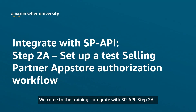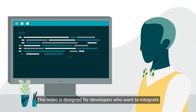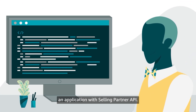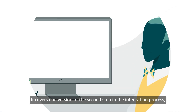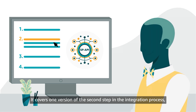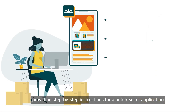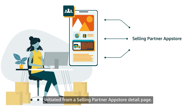Welcome to the training: Integrate with SP API, Step 2A — Set Up a Test Selling Partner App Store Authorization Workflow. This video is designed for developers who want to integrate an application with Selling Partner API. It covers one version of the second step in the integration process, providing step-by-step instructions for a public seller application initiated from a Selling Partner App Store detail page.